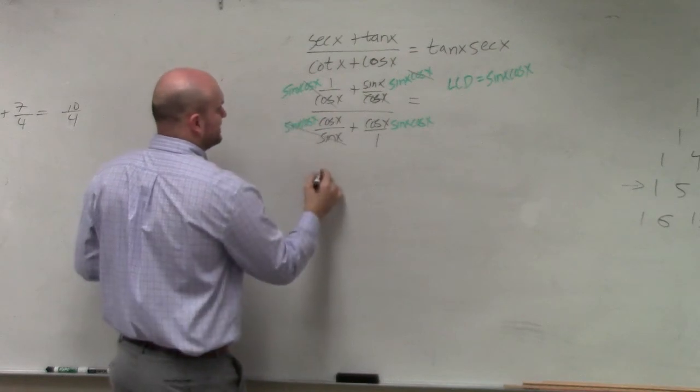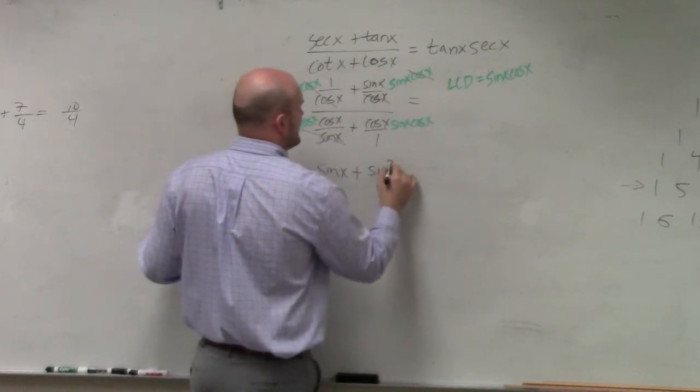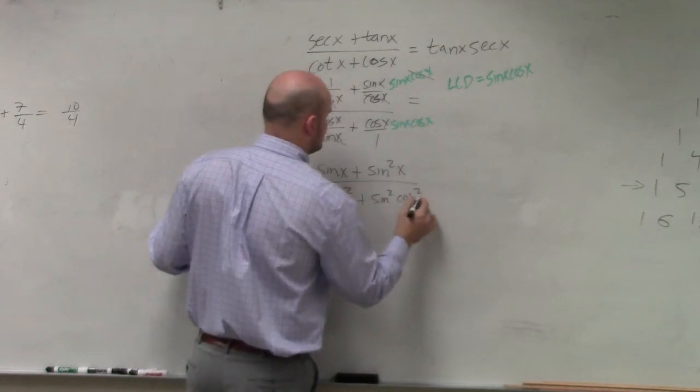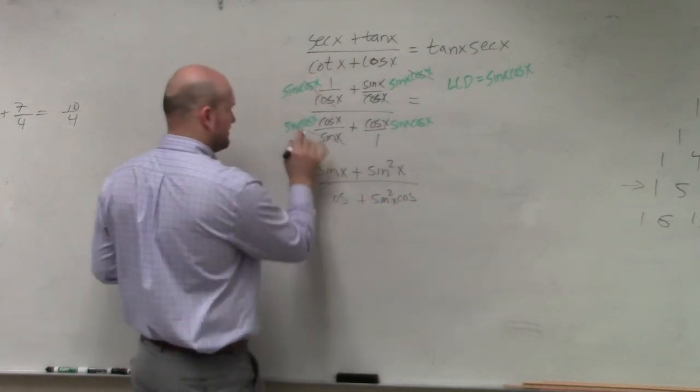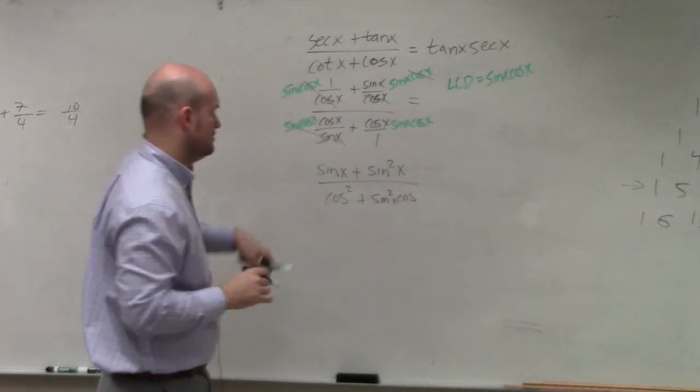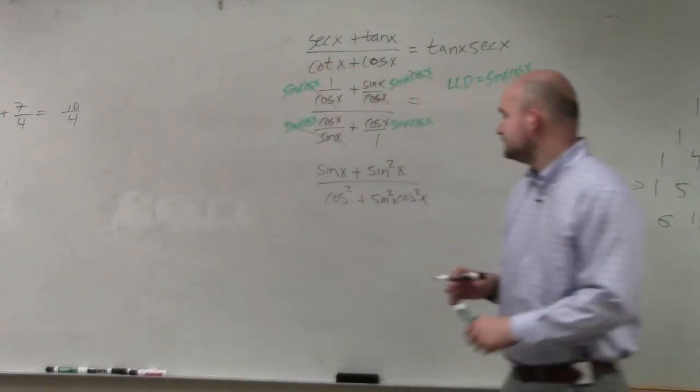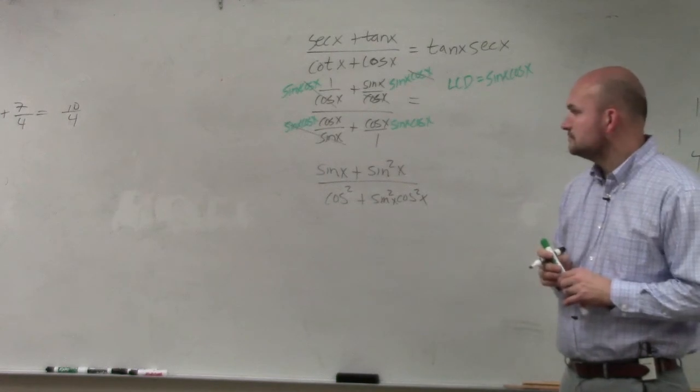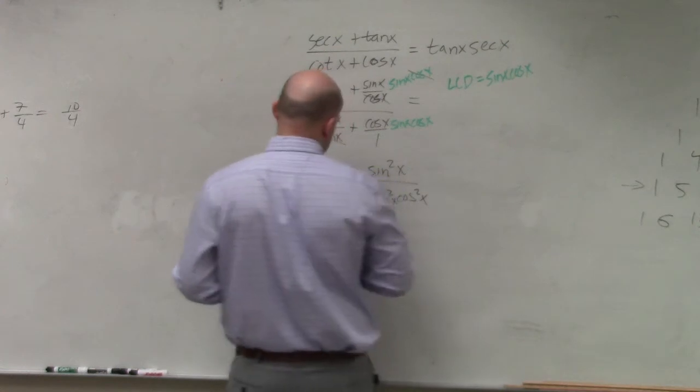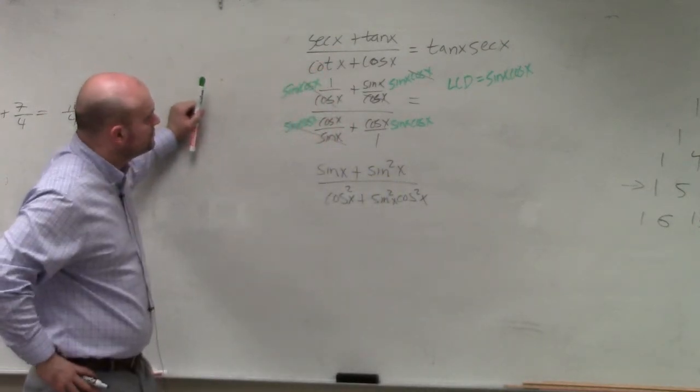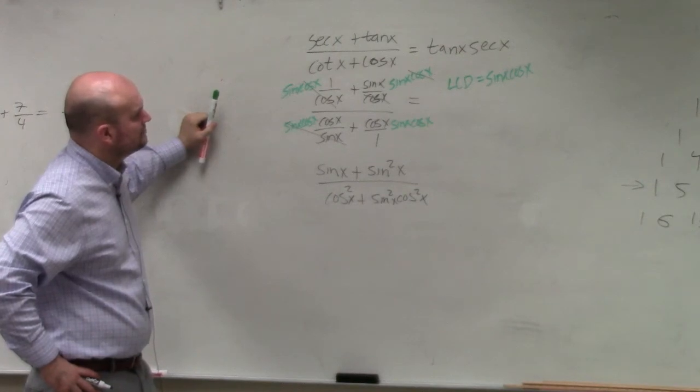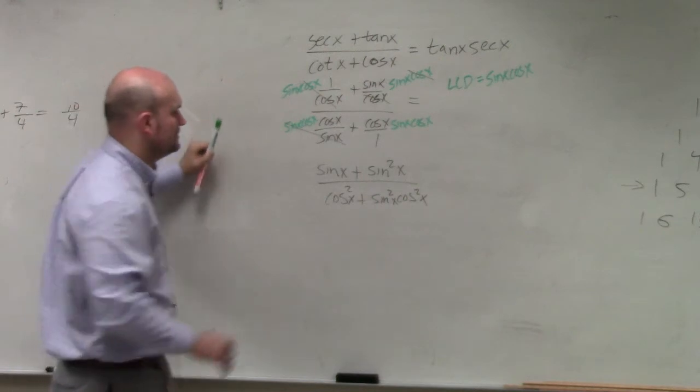By doing that, I now obtain sine of x plus sine squared of x plus, all over cosine squared plus sine squared, cosine squared. I'm sorry, cosine of x. That's just cosine of x. No, that's cosine squared of x. Plus. All right, follow me? I'm not sure if that's really helping us out. I'm not really sure if that's a better way of doing anything.